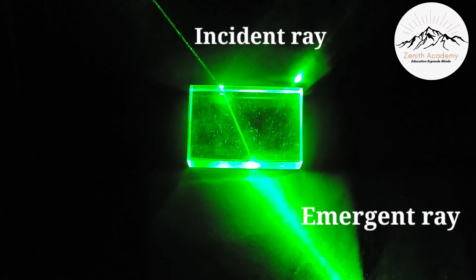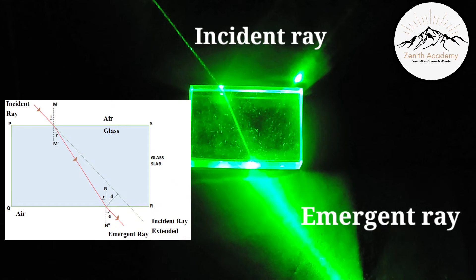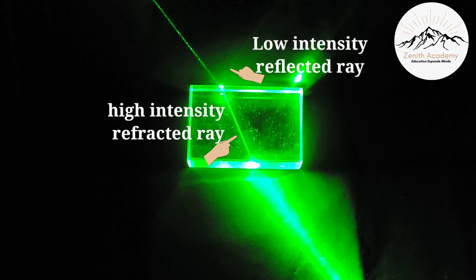Always remember that the incident ray and the emergent ray are parallel to each other, so if you produce the incident ray you can see that these two lines are parallel to each other. And when the light is striking on the surface for the first time, then the intensity of refraction is more than reflection.